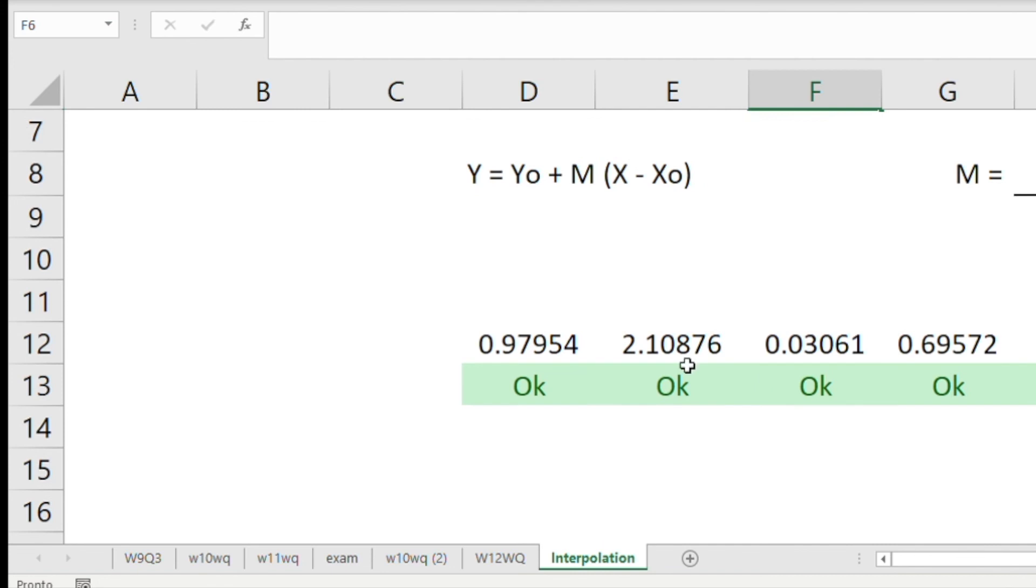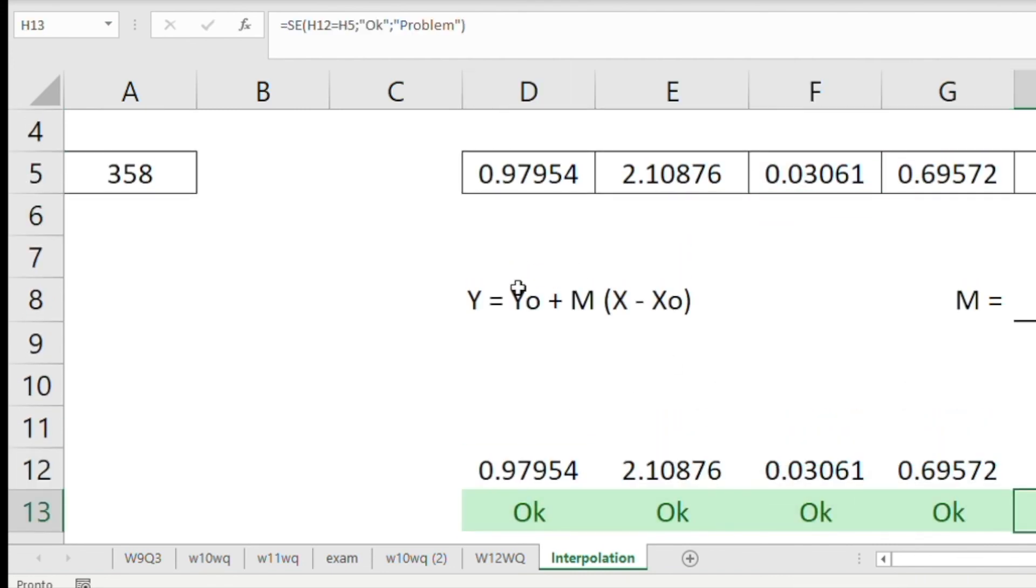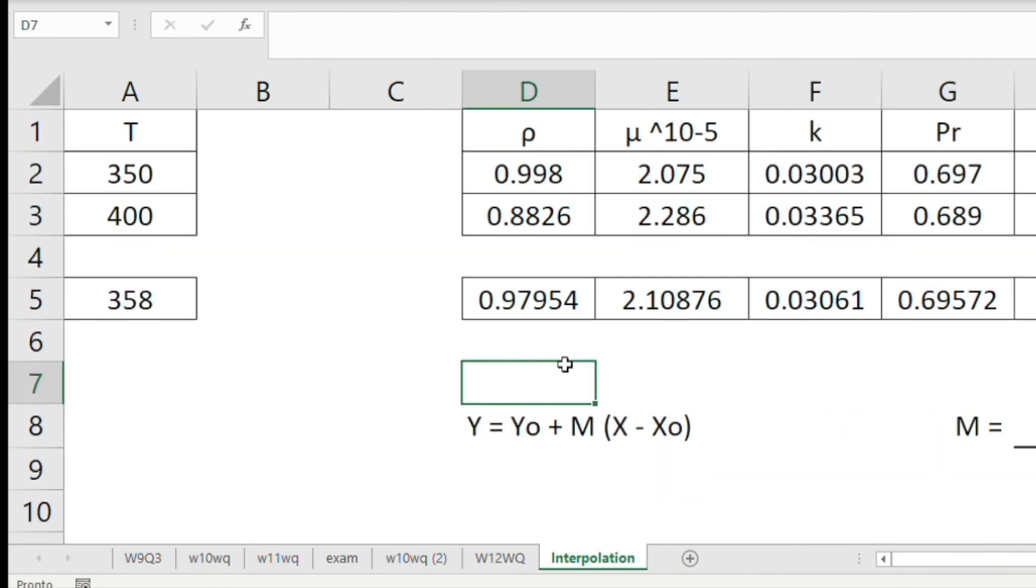So this is the advantage of using the spreadsheet is that you can do several of these at once, as opposed to one at a time. Then obviously doing it manually is ideal for you, at least at the beginning for you to understand what you're doing and why the calculation is done like so. The calculator is good once you have the habit of doing it. And then spreadsheet is good when you have a lot of properties you need to determine for a certain temperature or for a given other property. And you want to find entropy, internal energy, specific volume, and all that. So you can do all at once instead of doing one at a time.